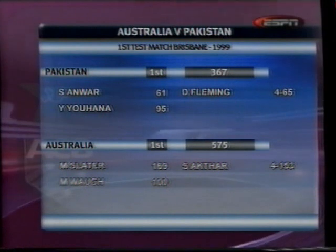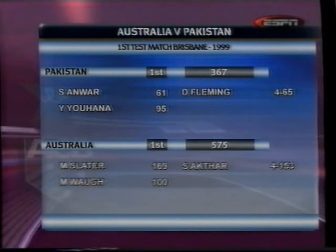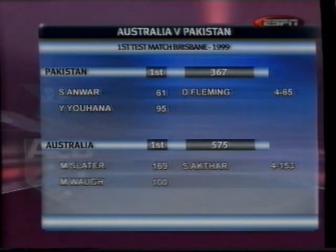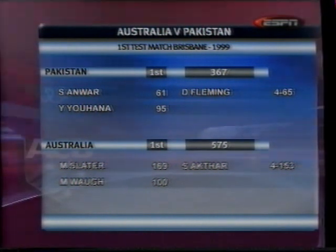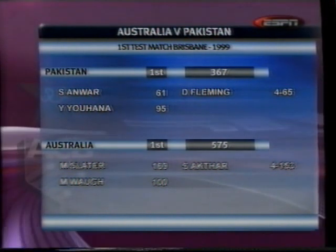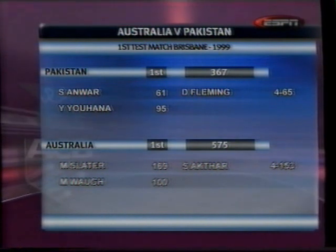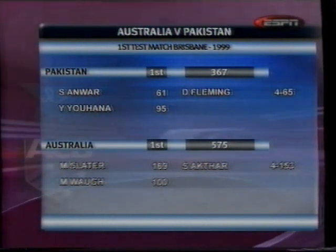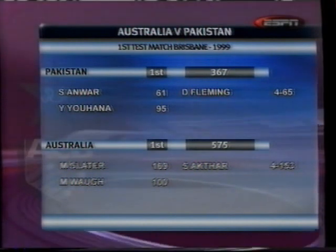This is the summary of the match going into the second innings. Pakistan were put into bat and scored 367, with Yusuf Youhana scoring 95. In reply, Australia piled on a mammoth 575, with centuries from Mark Slater and Mark Waugh, leaving Pakistan conceding a lead of 208. It was a very high-pressure situation for Saeed Anwar, going in at the top of the order looking to save the match for the visitors.